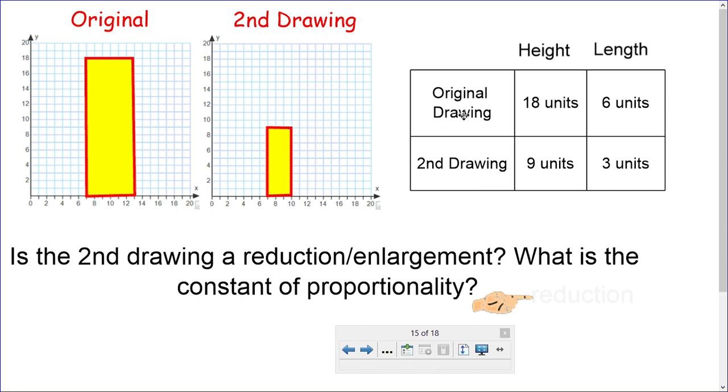The original drawing was 18 units in height. So it goes up from the bottom all the way up to 18. And the length is 6 units. So it goes from, looks like 7 all the way to 13. Here's the second drawing. It's 9 units high. So it goes from here up to 9. And 3 units in length. So from 7 to 10.